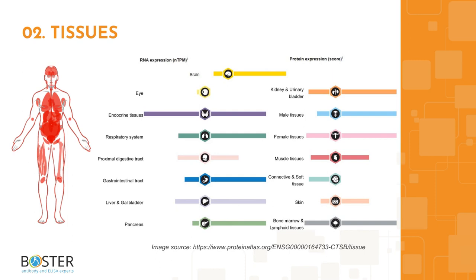CTSB is also expressed at lower levels in the heart, bone marrow, and lymphoid tissues. You can find more information on ProteinAtlas.org to check out which cell lines express CTSB and which ones don't. This information will come in handy when designing positive and negative controls for western blot and immunohistochemistry.